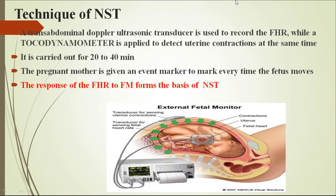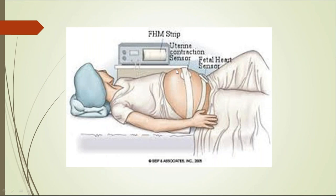Technique of the non-stress test: an abdominal ultrasonic transducer is used to record the fetal heart rate, and a tocodynamometer is attached to the uterus to sense uterine contractions. The test is carried out for 20 to 40 minutes — usually 20 minutes. If it is non-reactive, it is extended by a further 20 minutes. The pregnant mother is given an event marker to mark fetal movements. When she perceives a fetal movement and there is a corresponding fetal heart rate response, the NST is reactive.